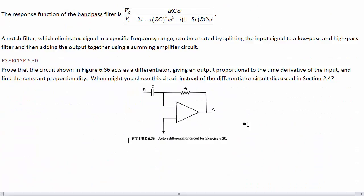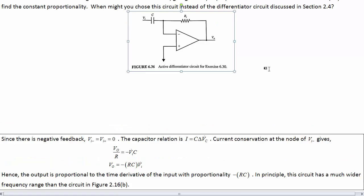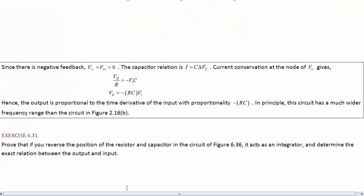Now let's look at an example. Prove that the circuit shown here acts as a differentiator. This is something you've already done. Just by analyzing it as a regular op amp you can find that the output goes like the derivative of the input. Prove that if you reverse the position of resistor and capacitor it acts as an integrator.